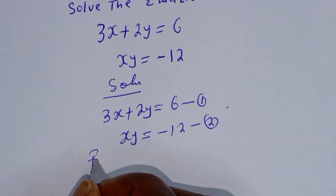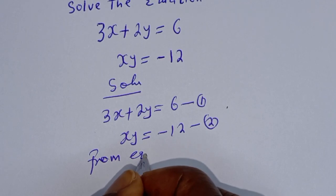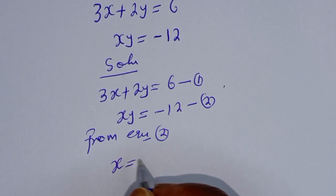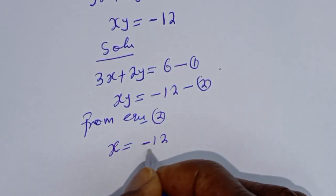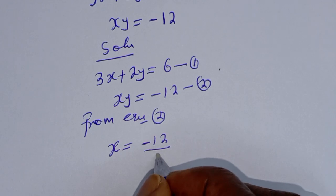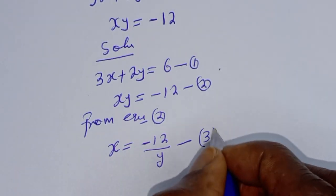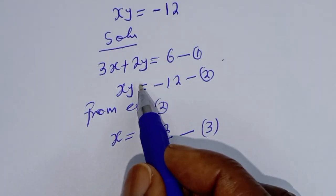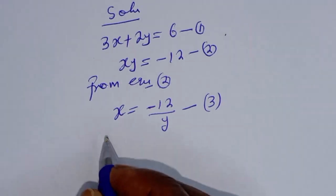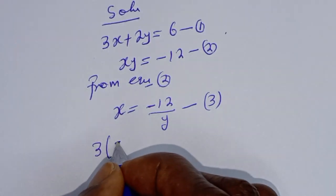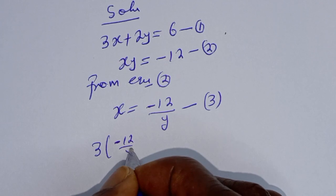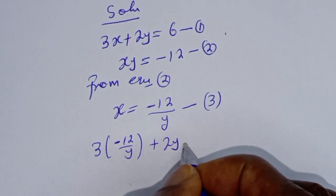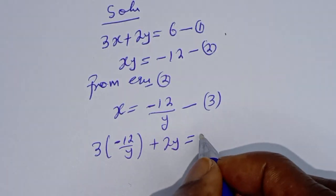From equation 2, x is equal to -12 over y. Let's call this equation 3. Now let's substitute equation 3 into equation 1. This gives 3 × (-12/y) + 2y = 6.